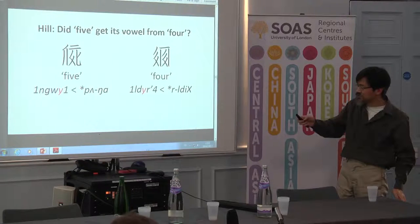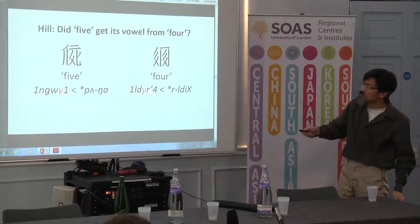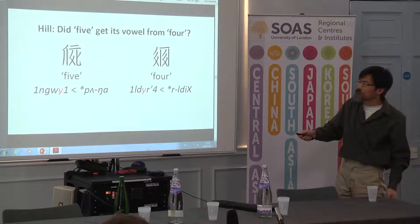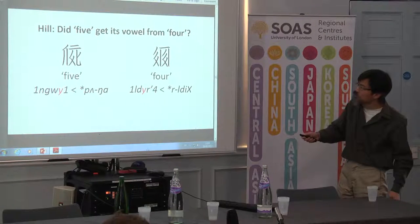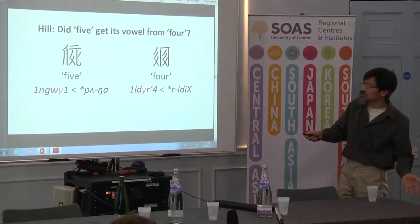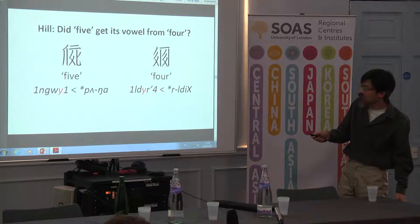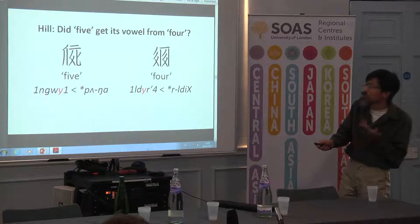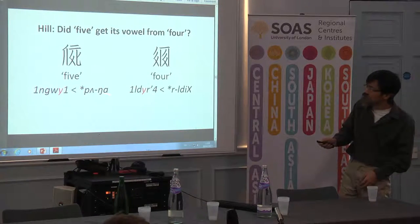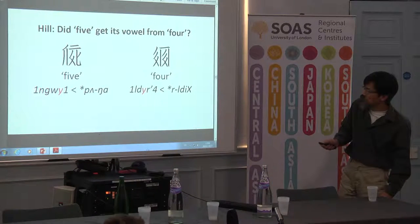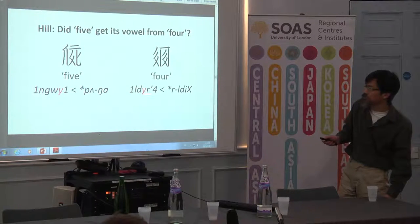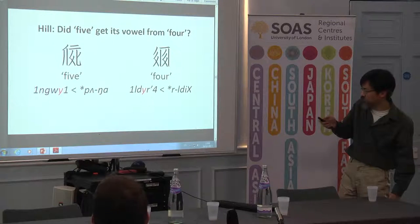I thought there might be something to Nathan's suggestion because four and five both have a's. But on the other hand, there are problems: they have different grades, and four also has a retroflex quality and a mysterious vowel marker that I have yet to identify. So yes, they're both romanized as Y in my system, but they're not really the same rhyme — this is uh and this is ur or something like that.